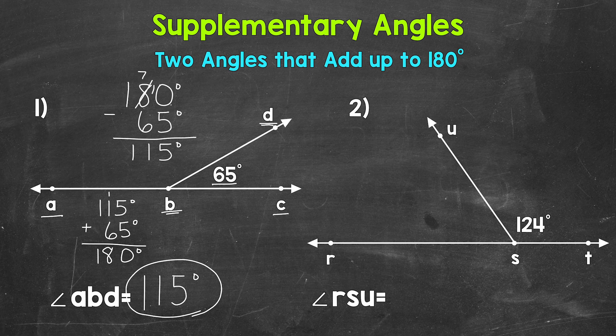Let's move on to number 2, where we have a given angle measure of 124 degrees. So that's for angle TSU. So with that given angle, we need to find the angle measure of angle RSU.